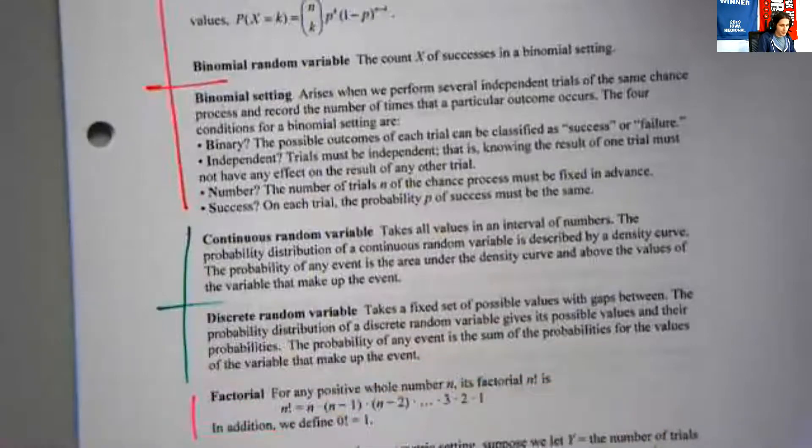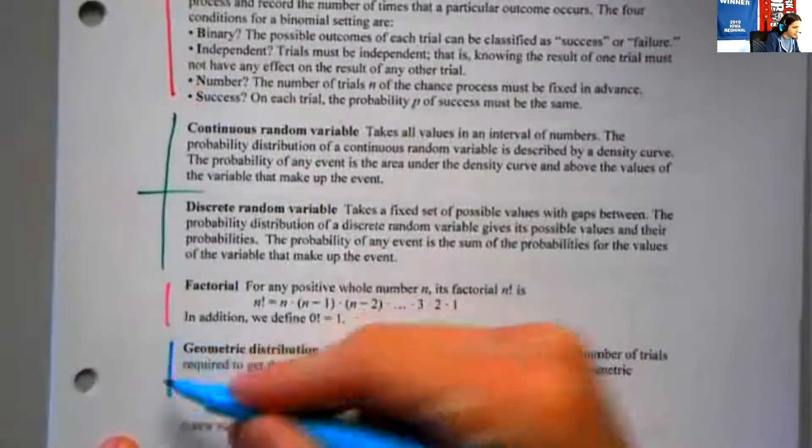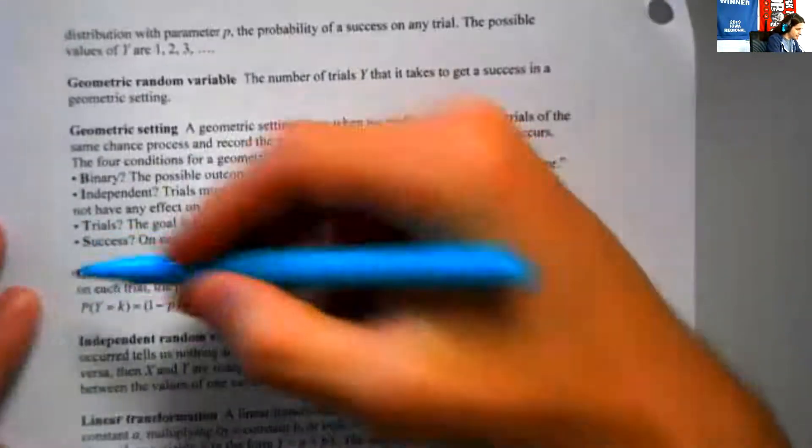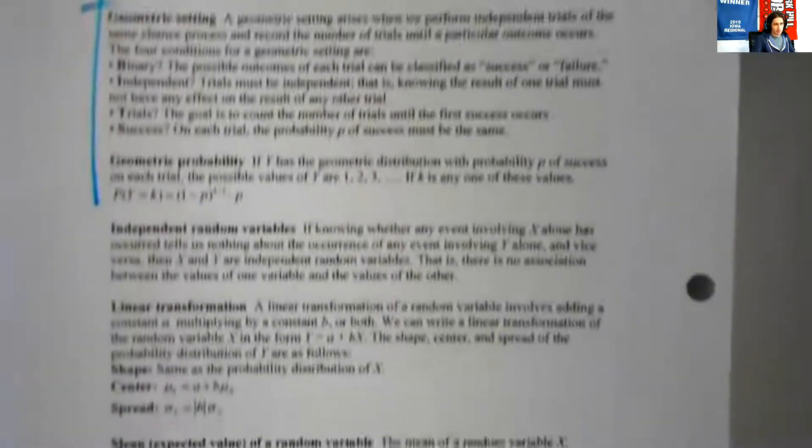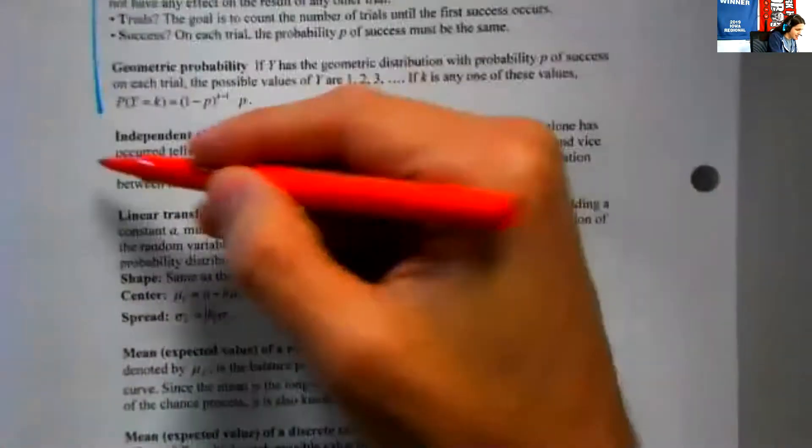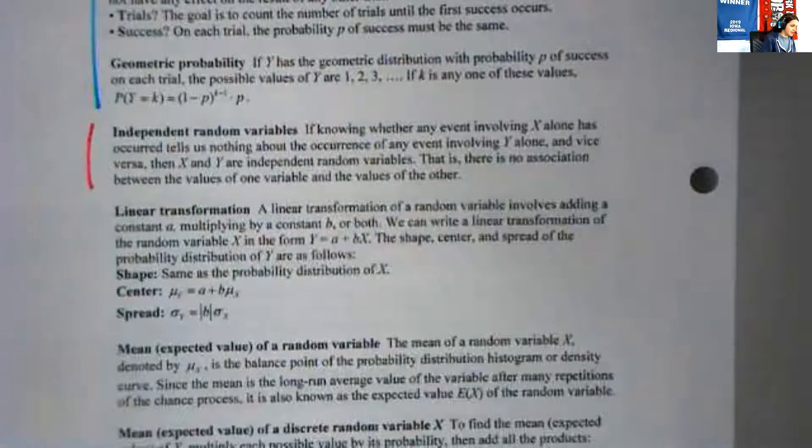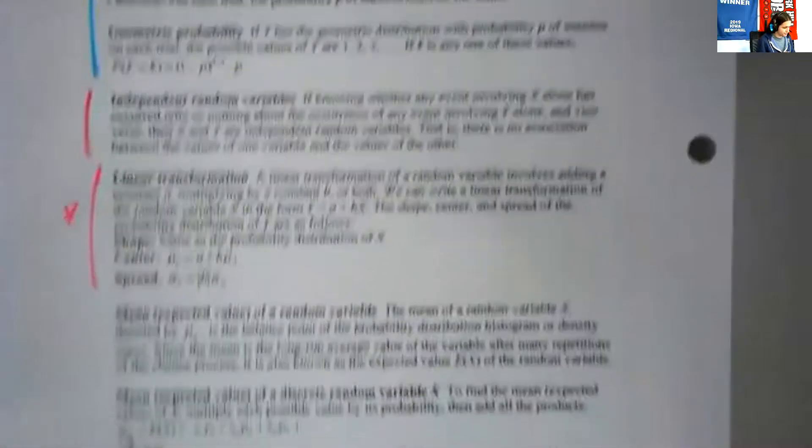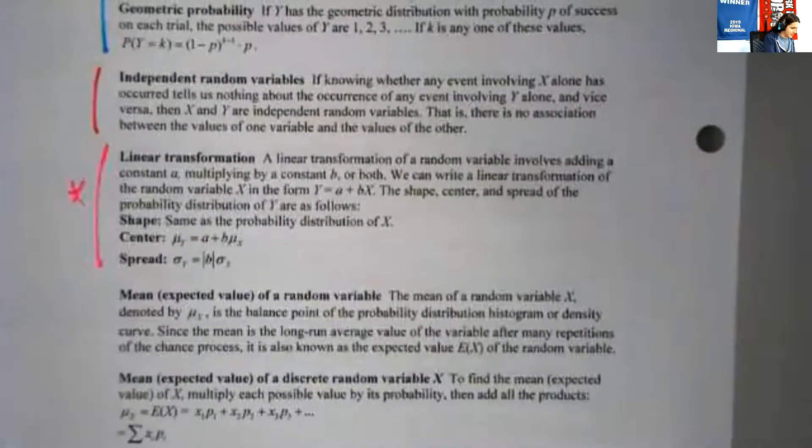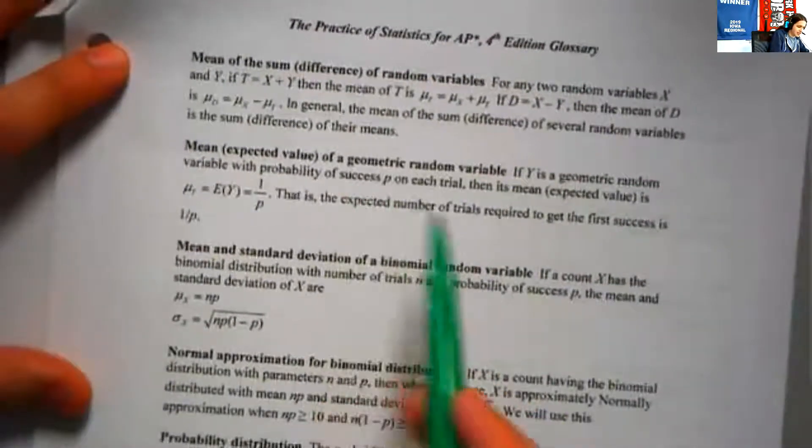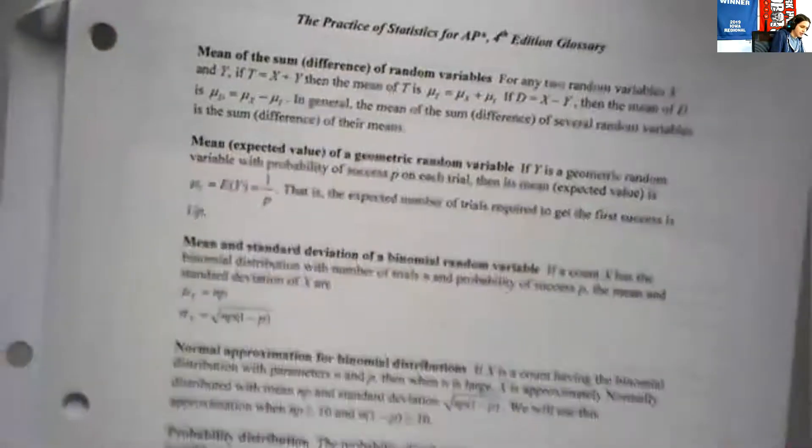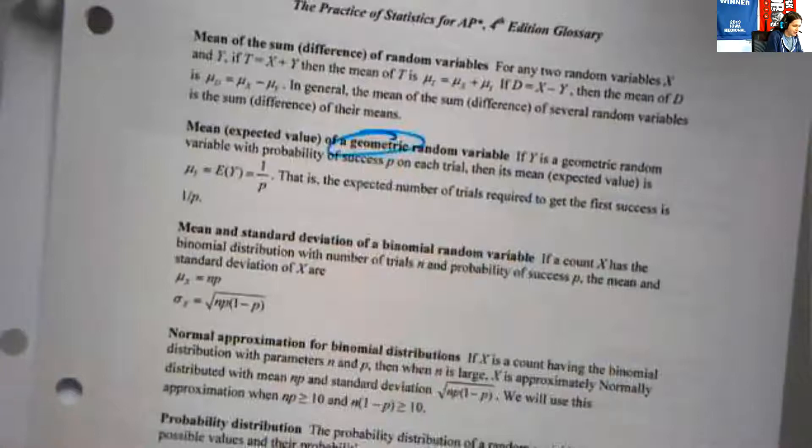You have continuous and discrete random variables, those are two very related things. You might have those on two cards or one card. Factorial, that's probably one thing. But then you notice you got geometric distribution, and I could say that could all be on one card, maybe two if you put the geometric setting on a different thing.